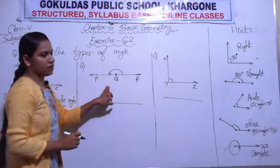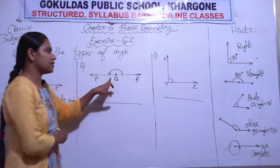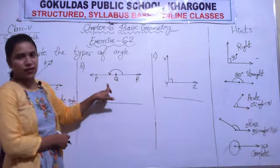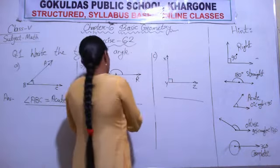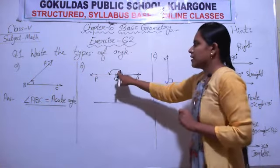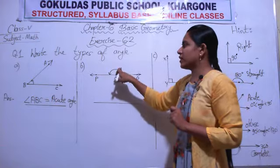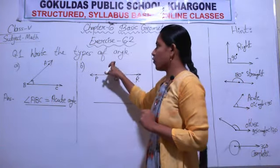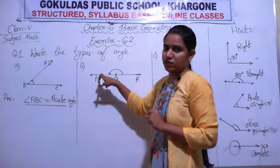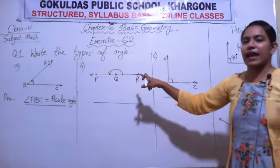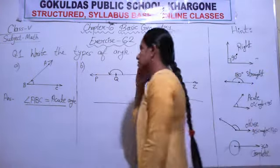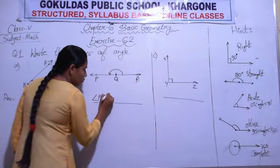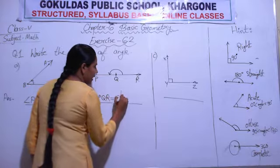Now observe question D: angle P-Q-R. Is it 90 degrees? No. Is it between 0 and 90? No — it is more than 90 degrees. In fact it is the angle of a straight line, meaning it is a straight angle. So angle P-Q-R is a straight angle.